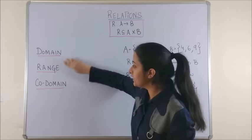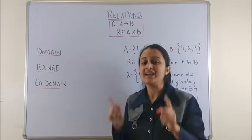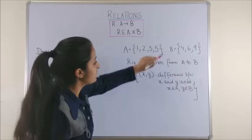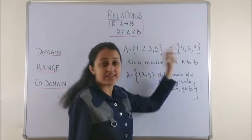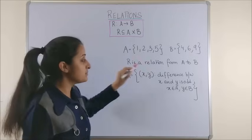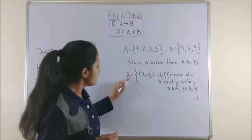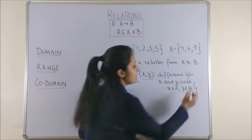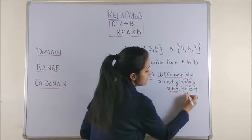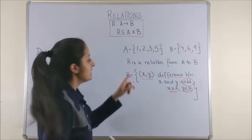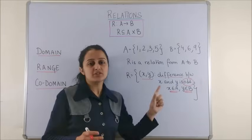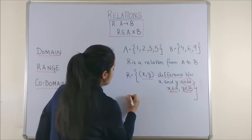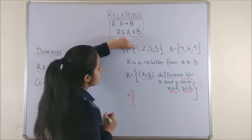Now in order to understand the domain, range and the co-domain for a given relation, let's take up a quick example. Suppose I have a set A which has the elements 1, 2, 3 and 5 and set B which has the elements 4, 6 and 9. R is defined to be a relation once again from A to B. Such that, R takes up all those ordered pairs whose difference between X and Y is an odd number. And needless to say, X must belong to A and Y must belong to B. Now, let us write this set builder structure in the roaster form. That means, let's simplify and write it in terms of ordered pairs. So, to pick up the combination, if I start with 1. Now, 1 minus 4 certainly gives me an odd number.